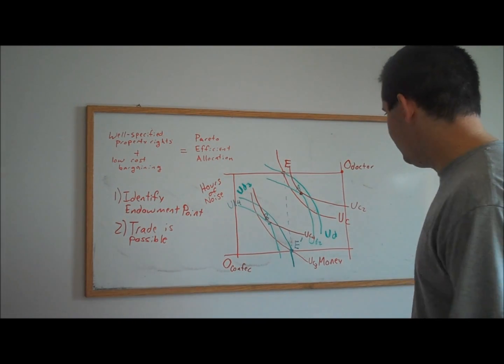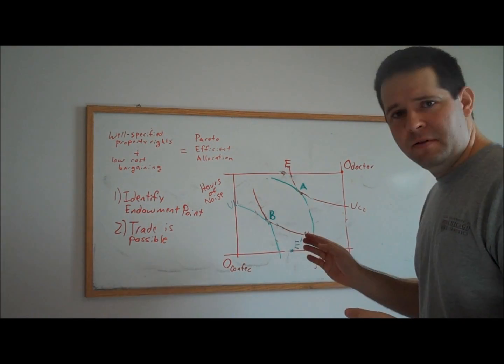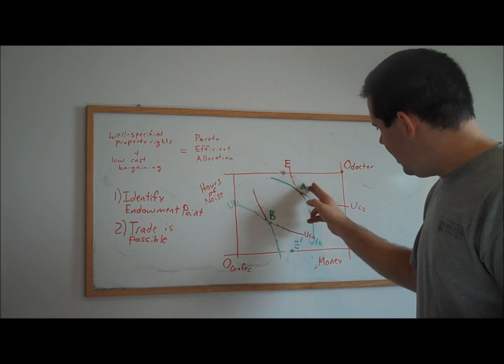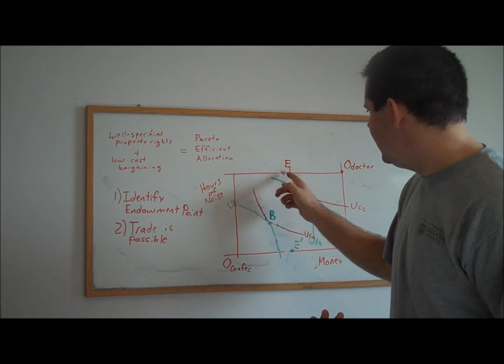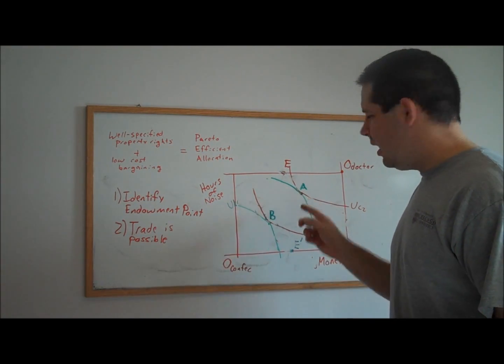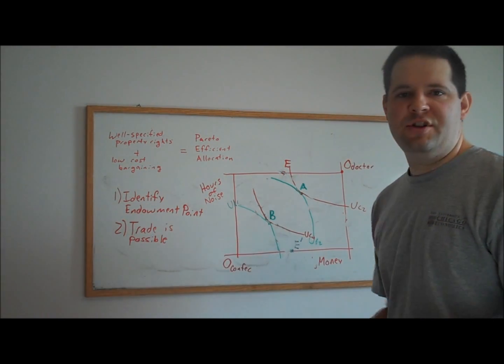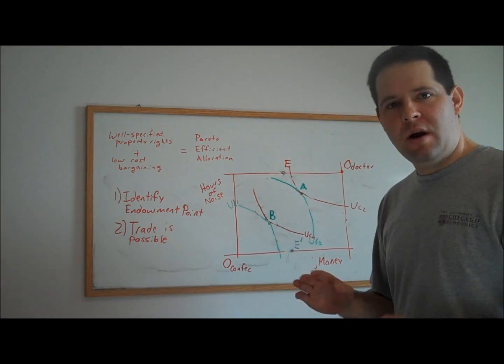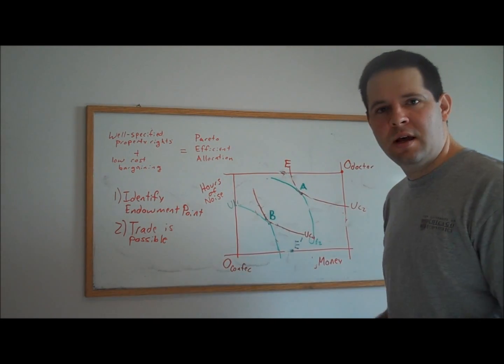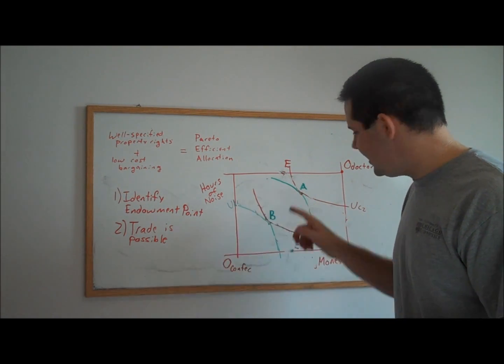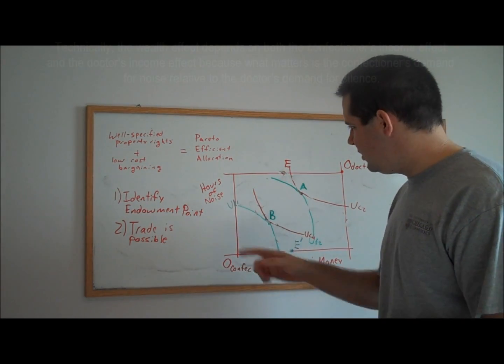Let's clean this up a little bit and just look at the Pareto-efficient allocations. So in allocation A, let's just look at the confectioner's indifference curves. You can see that allocation A is much preferred by the confectioner than allocation B. And of course, we would think that that's the case because the confectioner actually has the property right in the regime that leads to bundle A being the Pareto-optimal point. And he doesn't have the property right in the regime that leads to allocation B being the Pareto-optimal point. Or having the property right has an income effect here. It makes this individual better off.